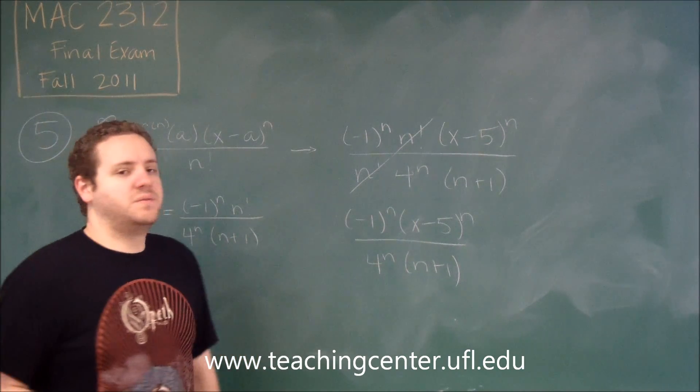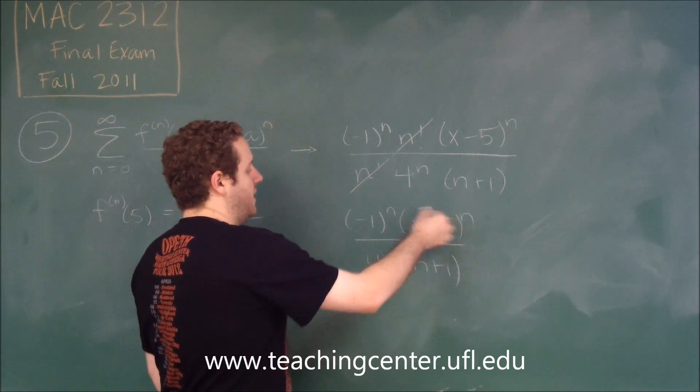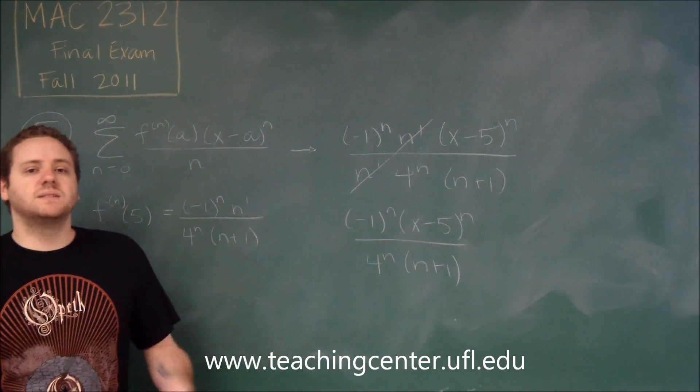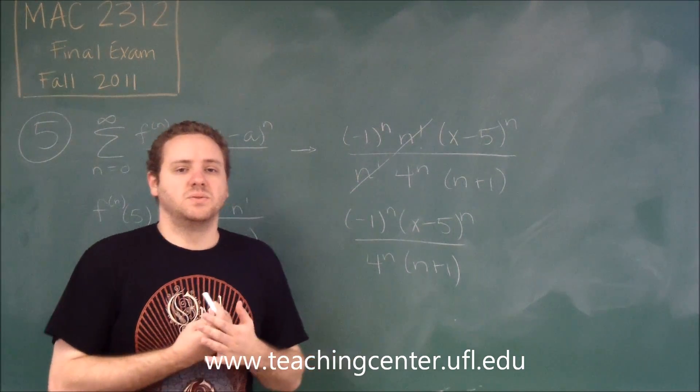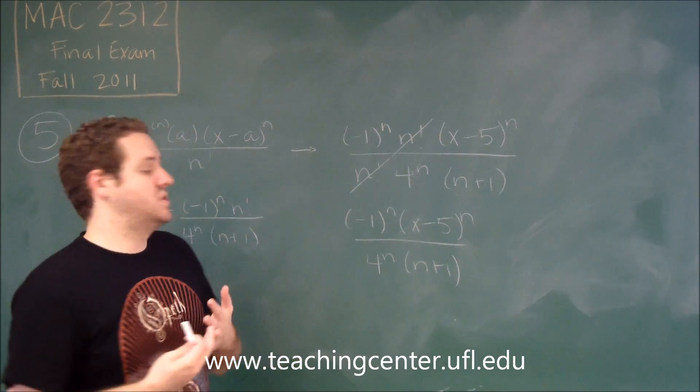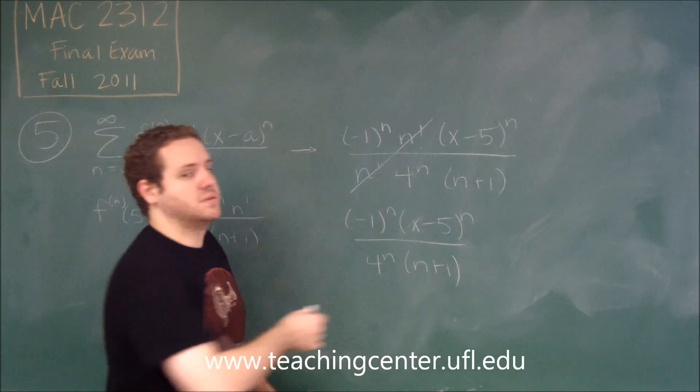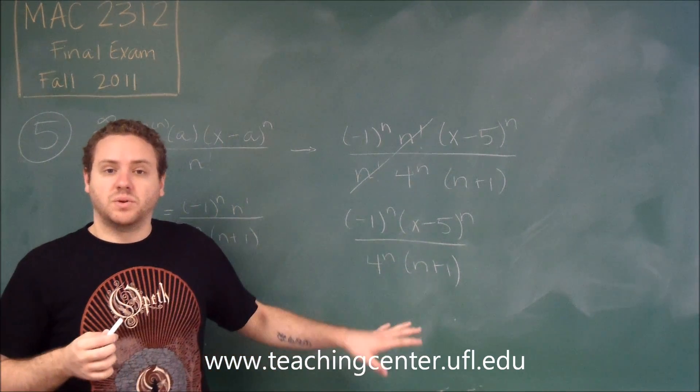Keep in mind that whenever you've done these types of problems, when you have a constant to an n and then you have some x minus or x plus something to the n, your radius of convergence, if there's no other factors that are going to affect the rate of convergence, which in this case there's not really because all we have is alternating n plus 1. We don't have anything that's bigger than an exponential, like factorial or something.